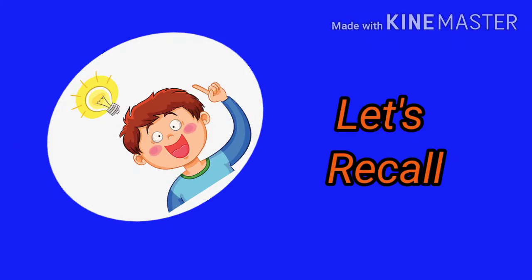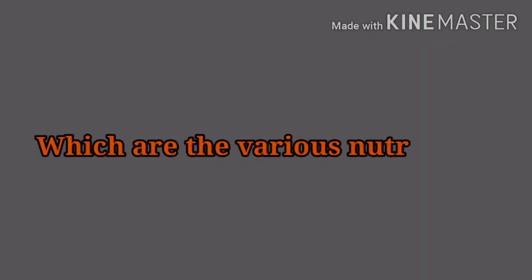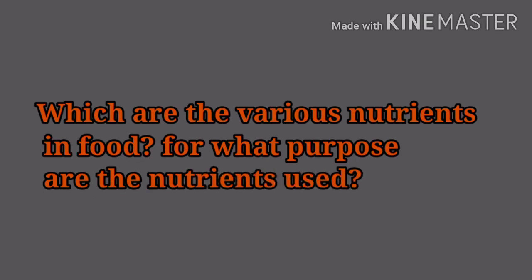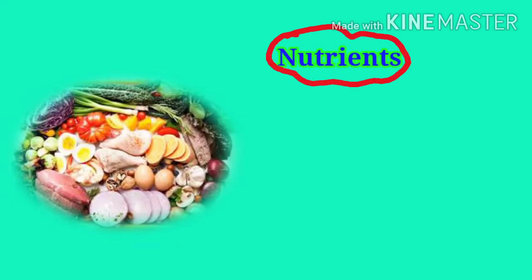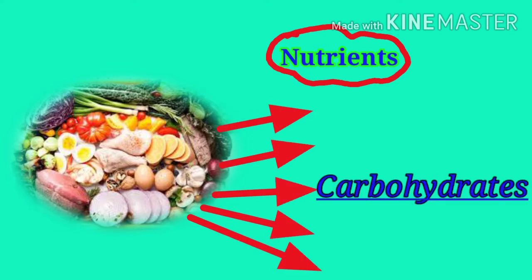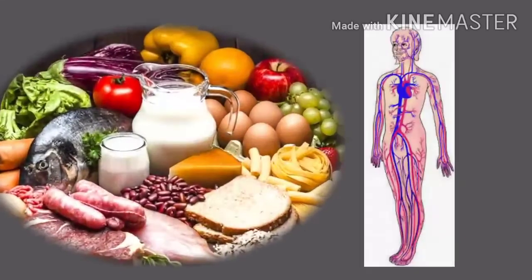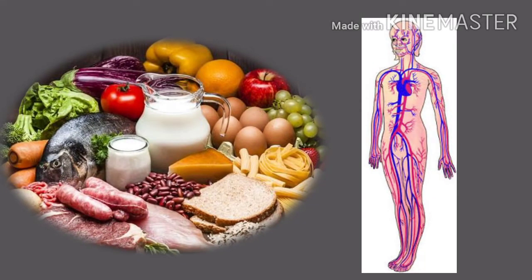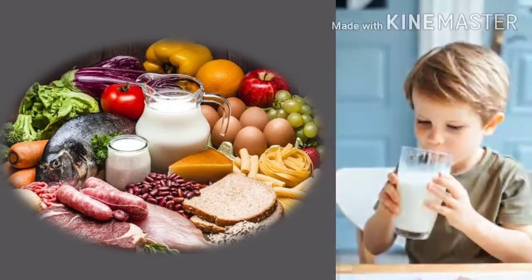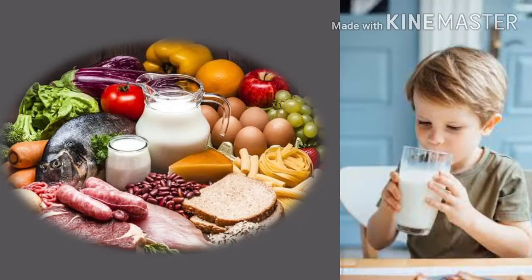Let's recall: which are the various nutrients in food, and for what purpose are the nutrients used? The various nutrients present in food are carbohydrates, proteins, fats, vitamins, and minerals. Nutrients necessary for various activities of the body are obtained from food. They are supplied to the various parts of the body through blood. The food that we consume does not mix with the blood as it is. For example, if you are drinking milk, the milk is not going to mix with your blood as it is.